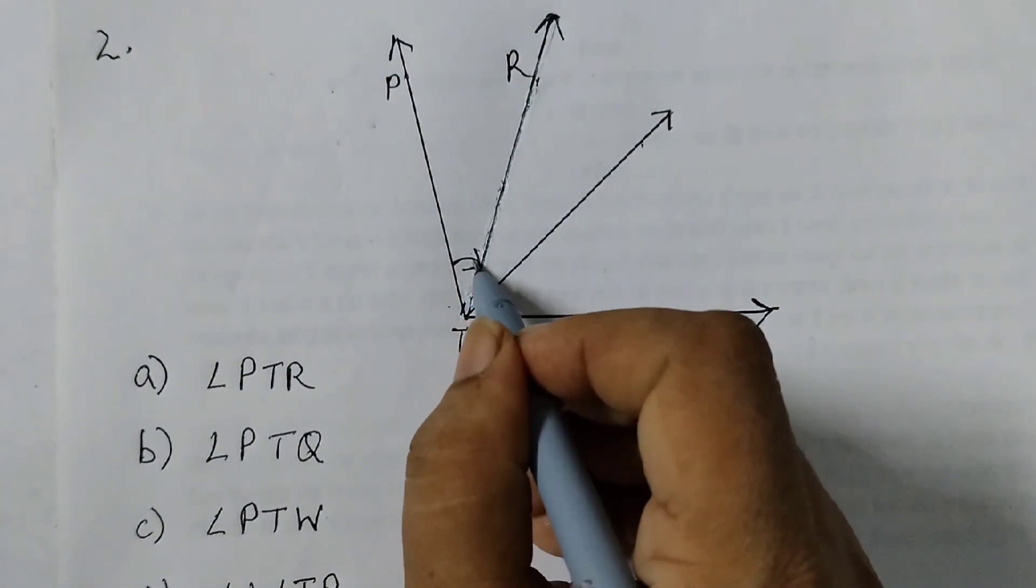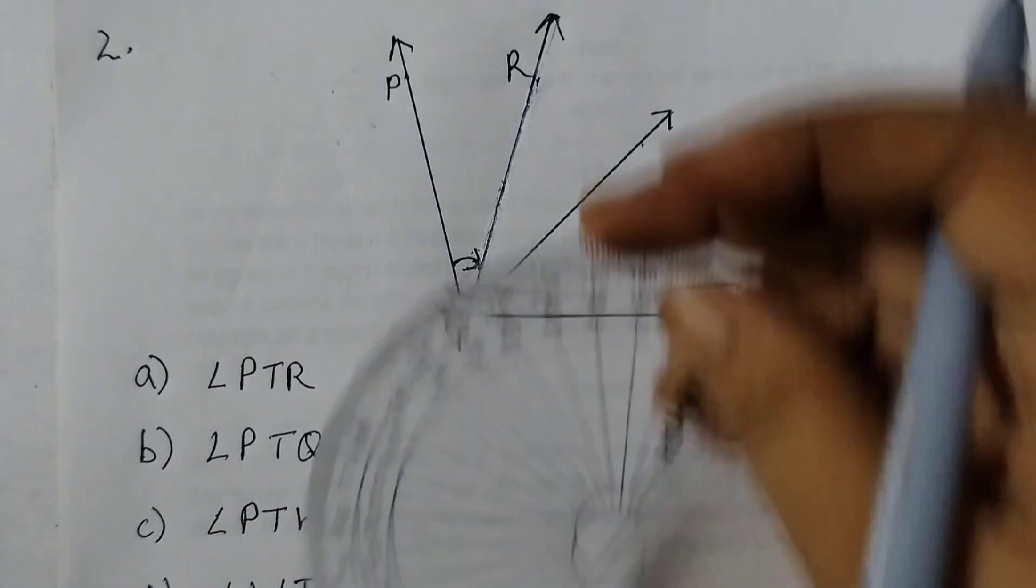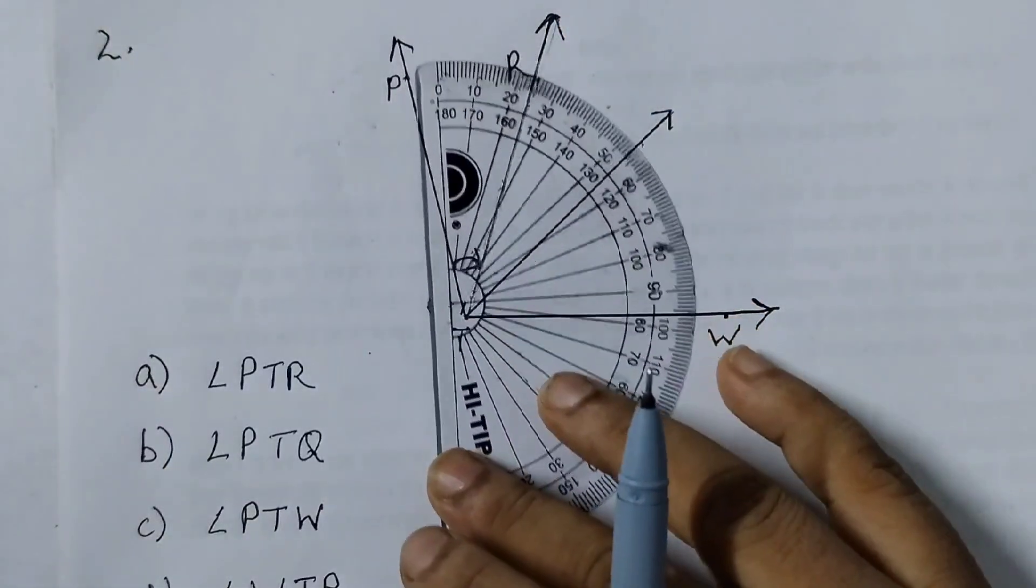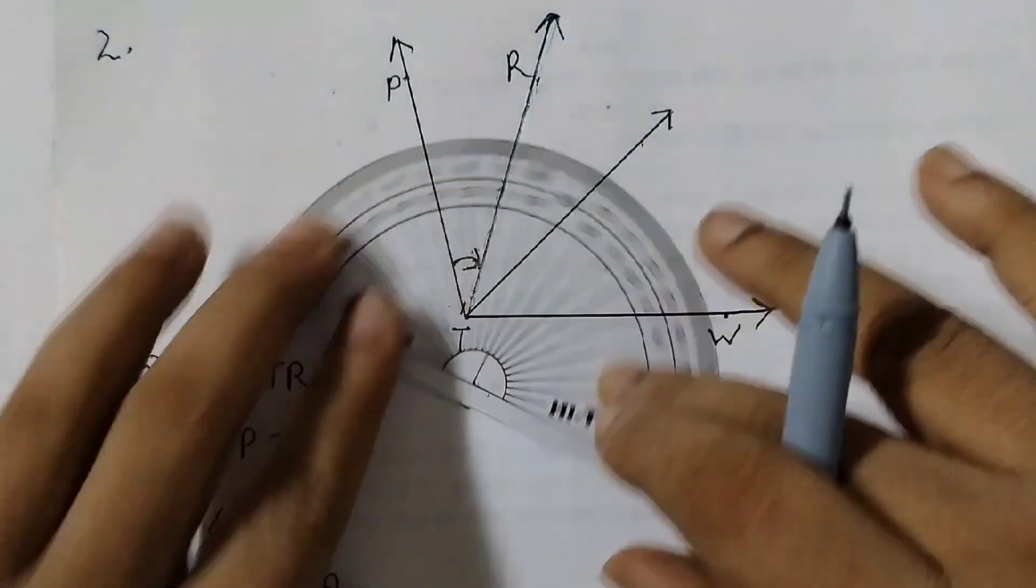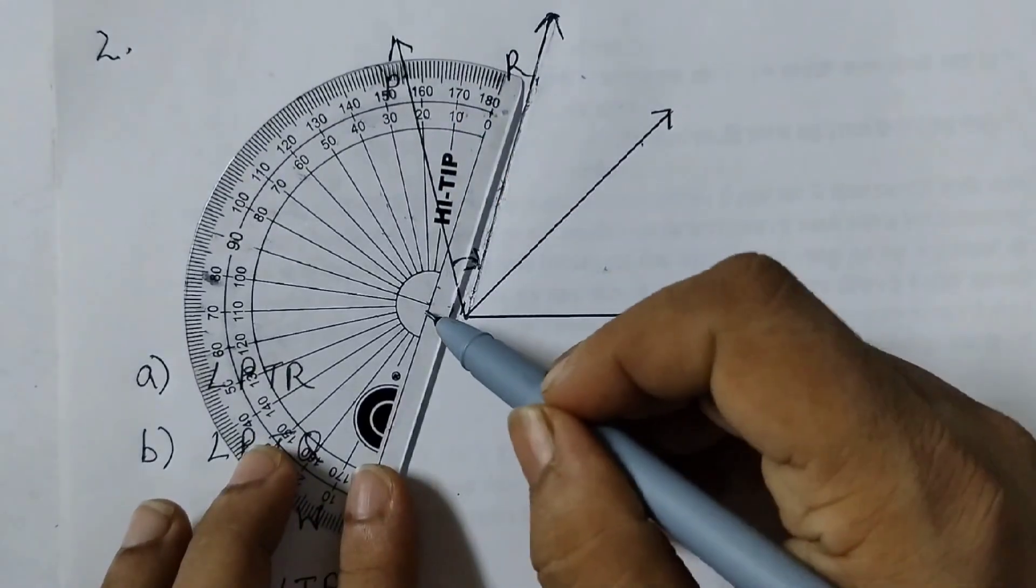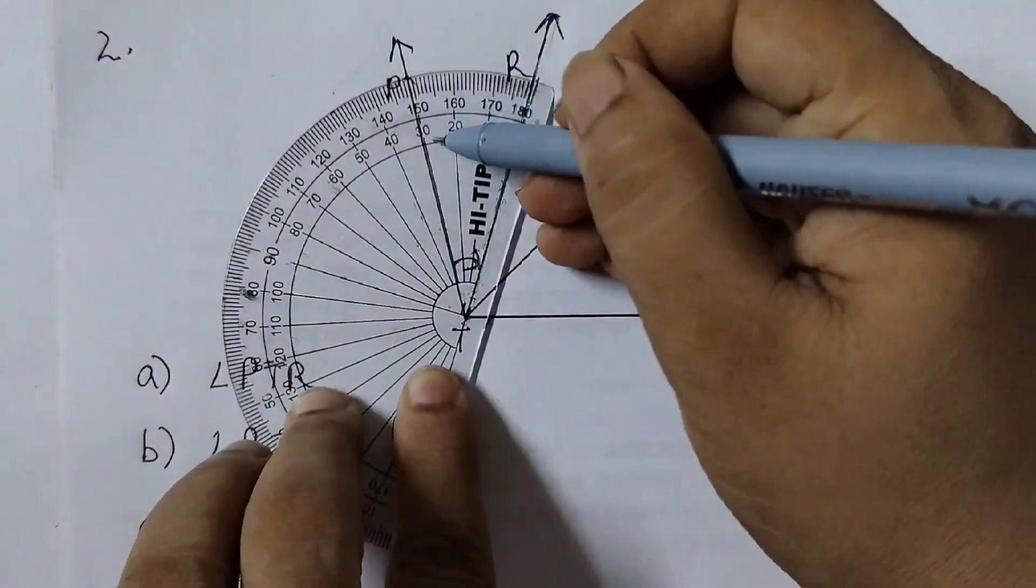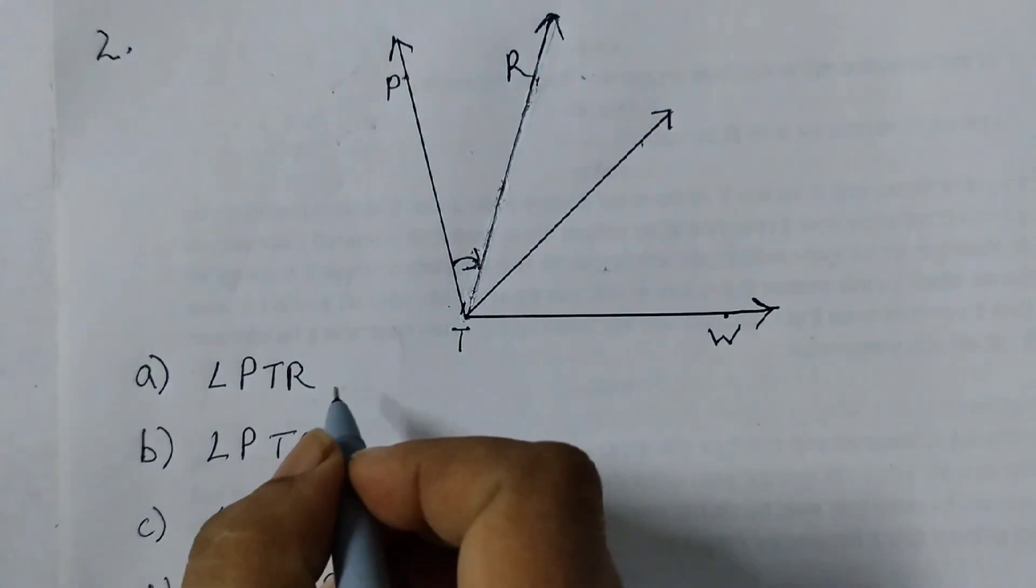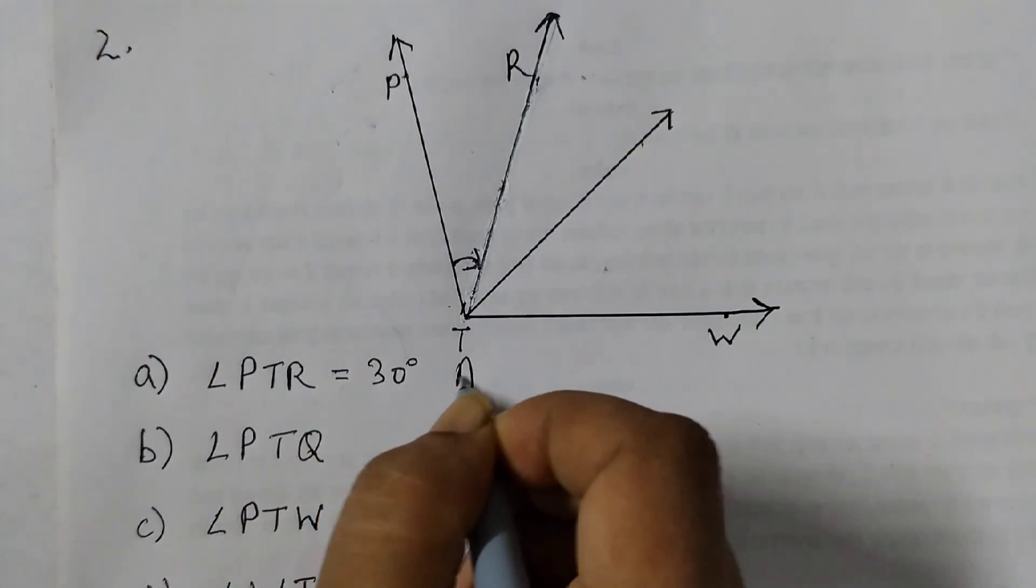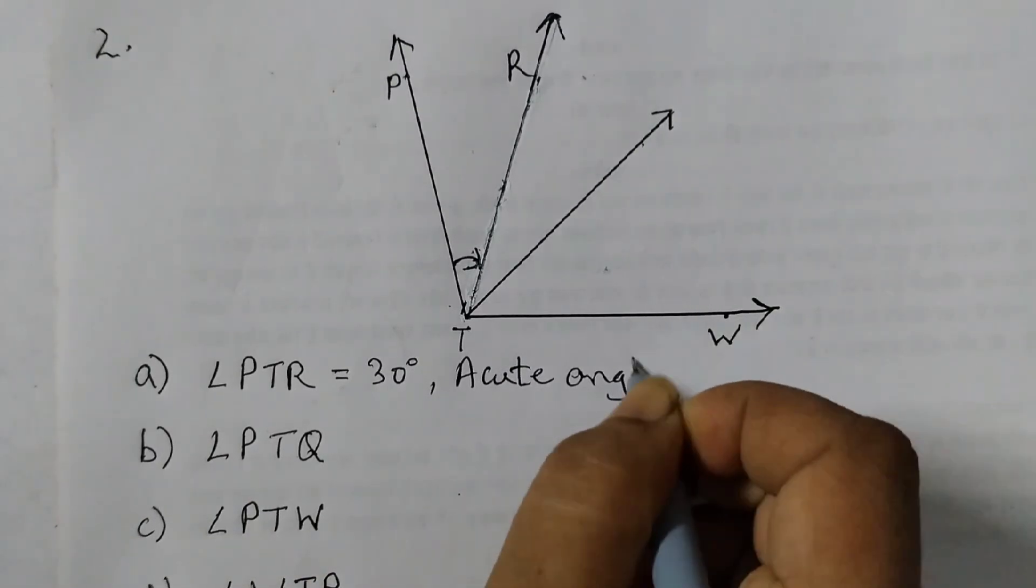Just look at the arrow. It is like this - starts from here and this is the arrow head. So this is the amount of rotation. You can place your protractor like this or you can place it like this. Let's place it like this. This is the center and this is the vertex. So we see this is 30 degrees angle. So angle PTR is 30 degrees angle, and this is an acute angle.